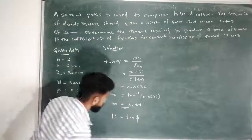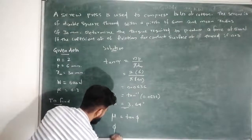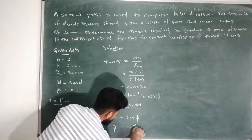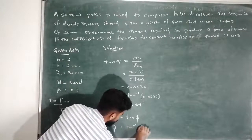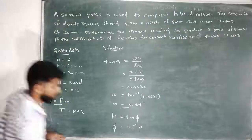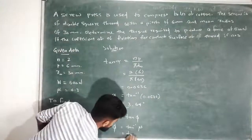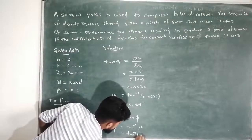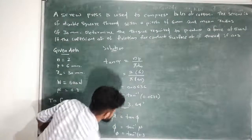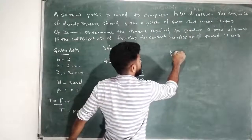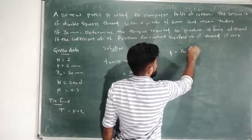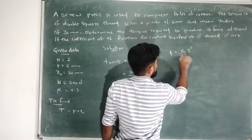We have alpha equal to 3.64 degrees. We have phi. Mu equals tan(phi), so phi equals tan inverse of mu, that is tan inverse of 0.3. So phi value is equal to 16.7 degrees.